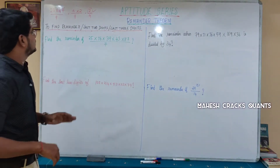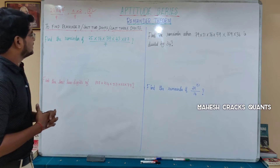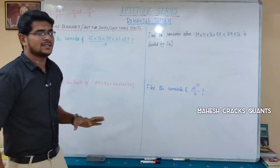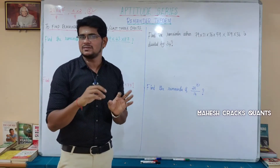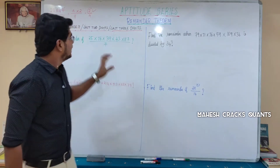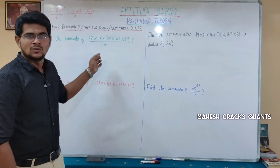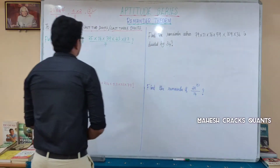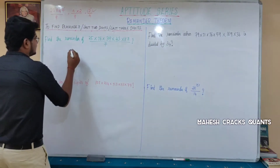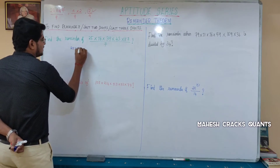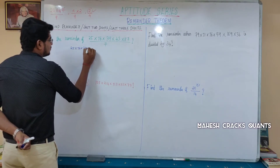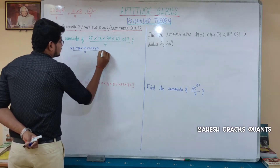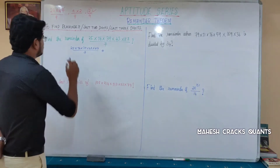Find the remainder of 25 into 76 into 39 into 43 into 87 divided by 7. We are going to find the individual remainder for each value divided by 7, then multiply all the remainders together.